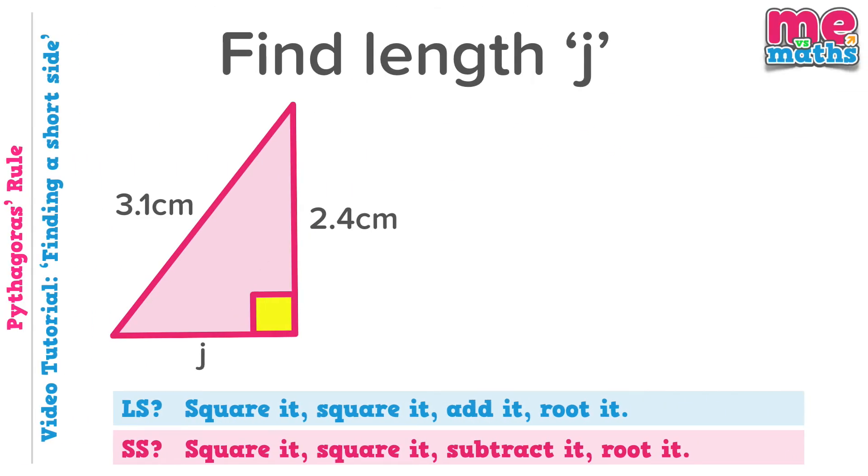Another straightforward example here then. We're being asked to find side J. Here, 3.1 is the hypotenuse, so J is again one of the shorter sides. Short side, subtract. So square it, square it, subtract it, root it.